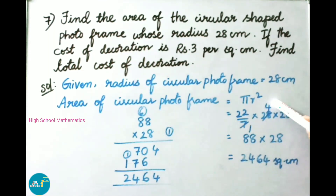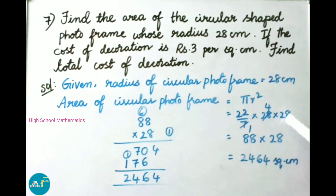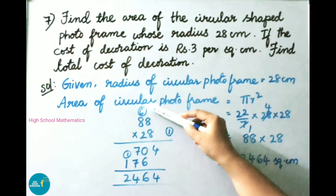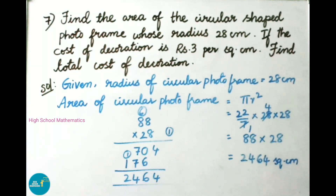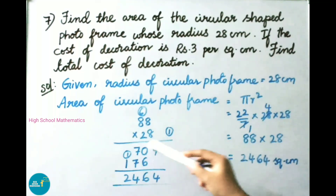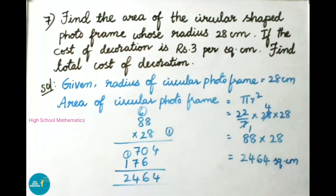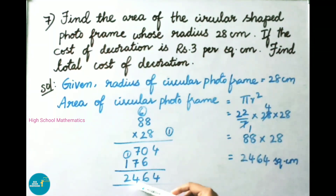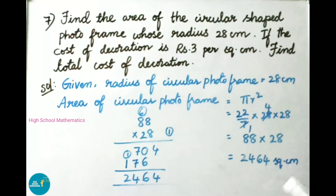Simplifying: 22 by 7 into 28 into 28. Since 28 divided by 7 is 4, we get 22 into 4 into 28, which is 88 into 28. Multiplying 88 by 28: 88 into 8 is 704, and 88 into 20 is 1760. Adding: 704 plus 1760 equals 2464. Therefore the area of the circular photo frame is 2464 square cm.